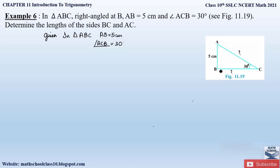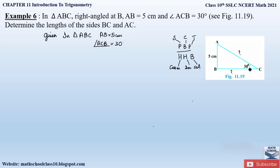Let us first find the side length of BC. We will choose the trigonometric ratio according to the side we want to determine. The best way to remember all trigonometric ratios is the fraction: perpendicular by hypotenuse is sine, cosine is base by hypotenuse, and tan is perpendicular by base. The reciprocals give cosecant, secant, and cotangent.